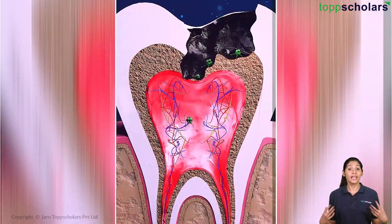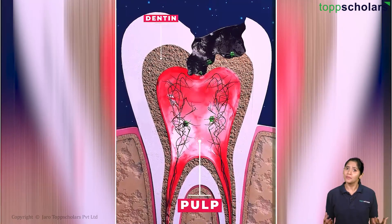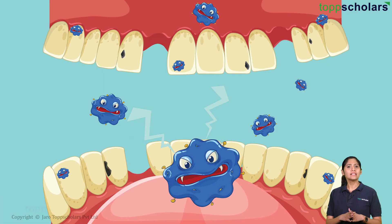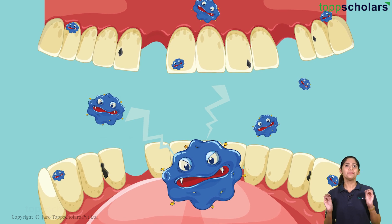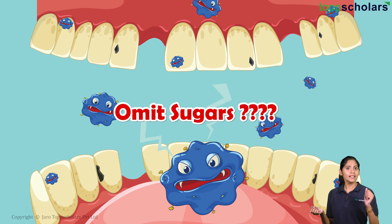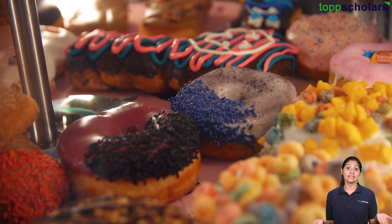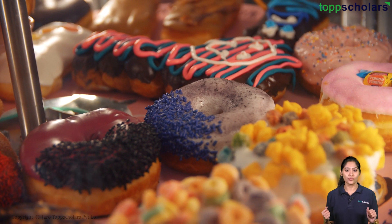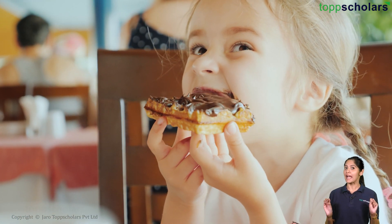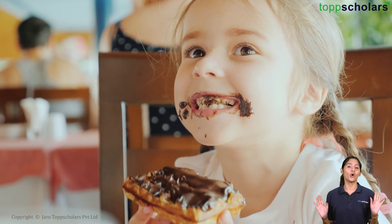If untreated, microorganisms may invade the pulp causing inflammation and infection. Also, do you notice that the main problem here is the sugars? So why not cut that from our diet? Well, we can't completely omit sugars as they are the energy source for us. But we should definitely cut back on sugary snacks, soda, sports and energy drinks that contain a lot of sugar.